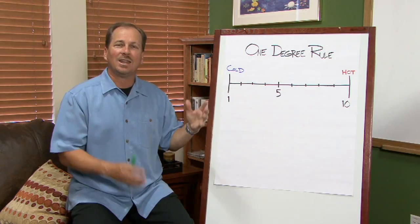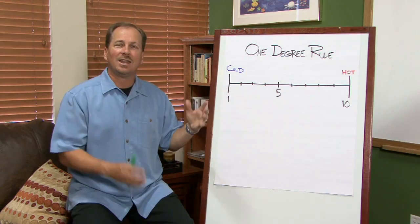The truth is most of us live somewhere between these two. On any given day when I share this simple tool with people, they can say, you know, I'm at about a 4 right now, or I'm at a 7.